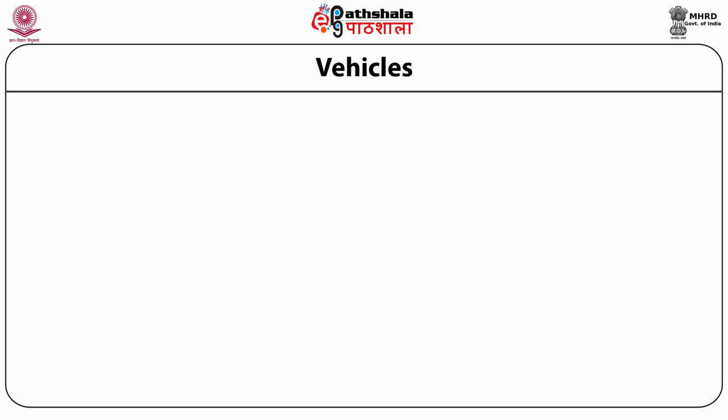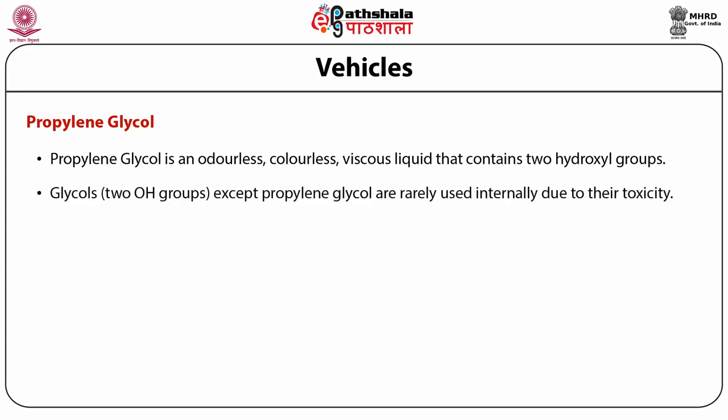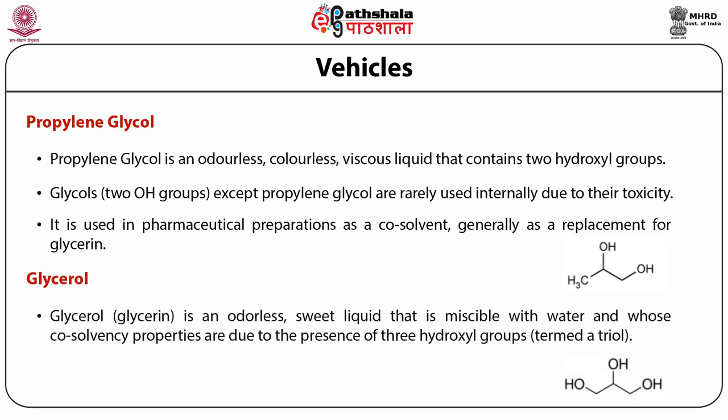Another example from non-aqueous vehicles is propylene glycol — an odorless, colorless, viscous liquid that contains two hydroxyl groups. Glycols, that is compounds with two hydroxyl groups, except propylene glycol, are rarely used internally due to their toxicity. It is used in pharmaceutical preparations as a co-solvent, generally as a replacement for glycerin. Another agent in this category is glycerol or glycerin — an odorless sweet liquid that is miscible with water and whose co-solvency properties are due to the presence of three hydroxyl groups.